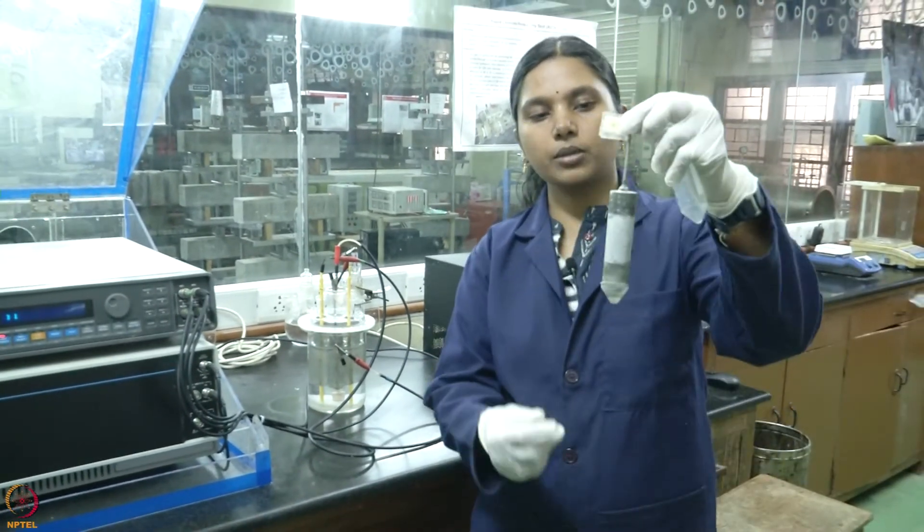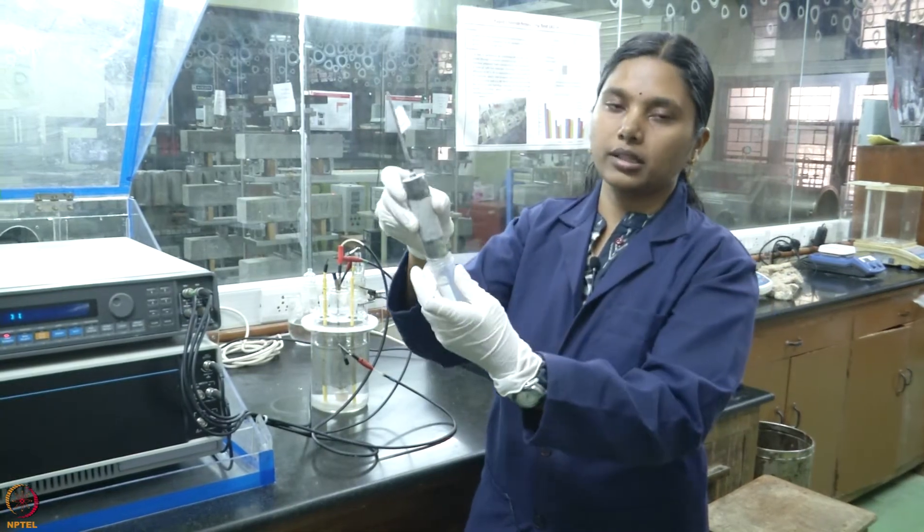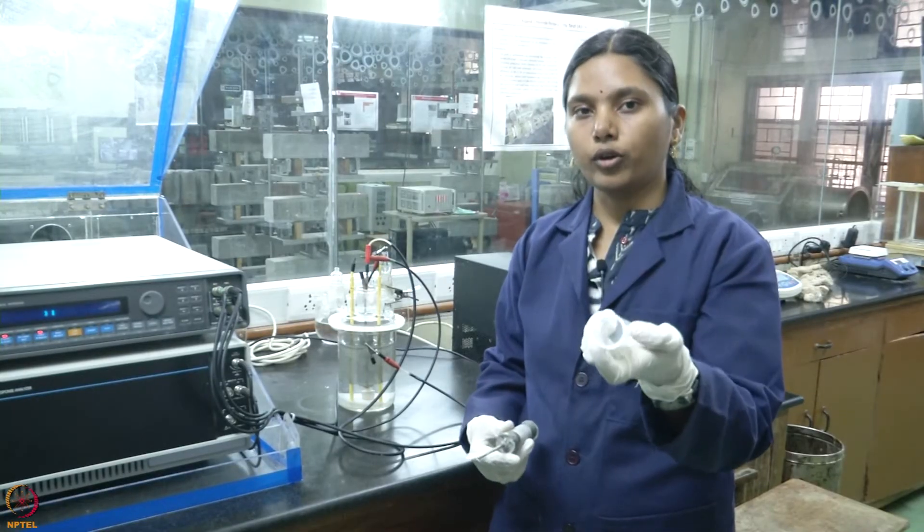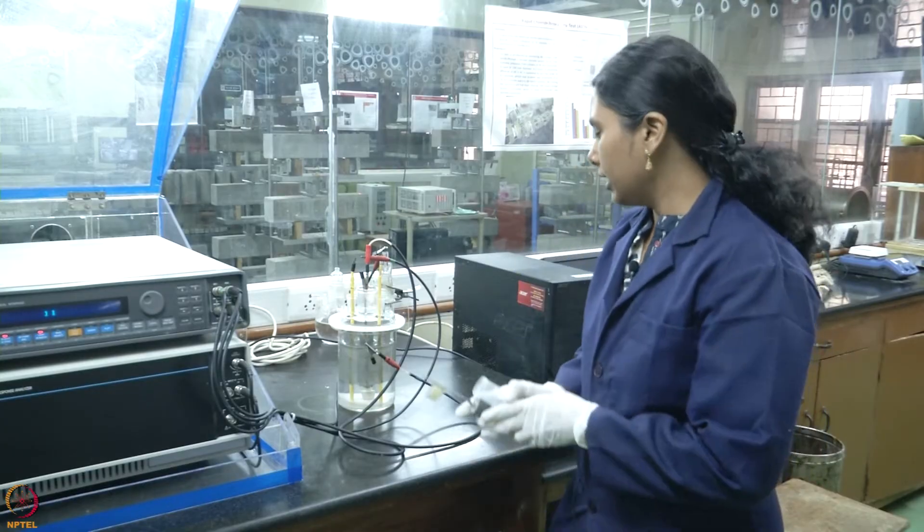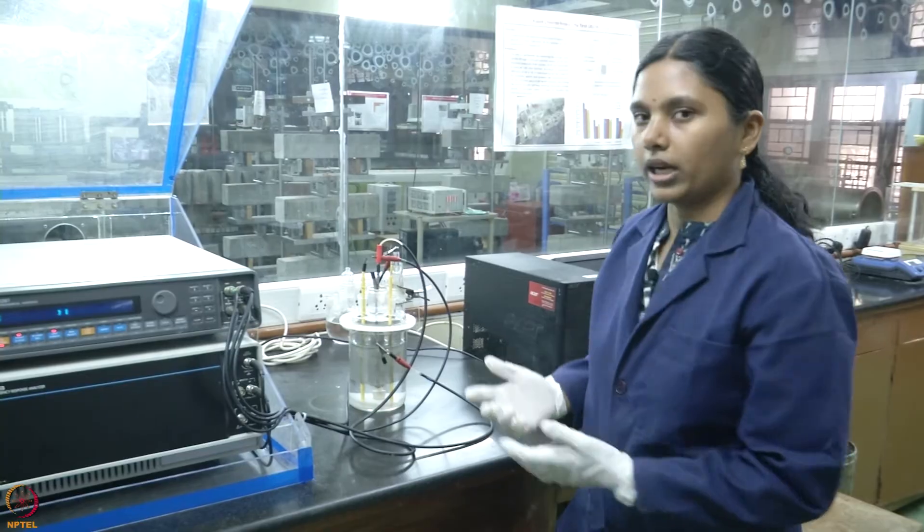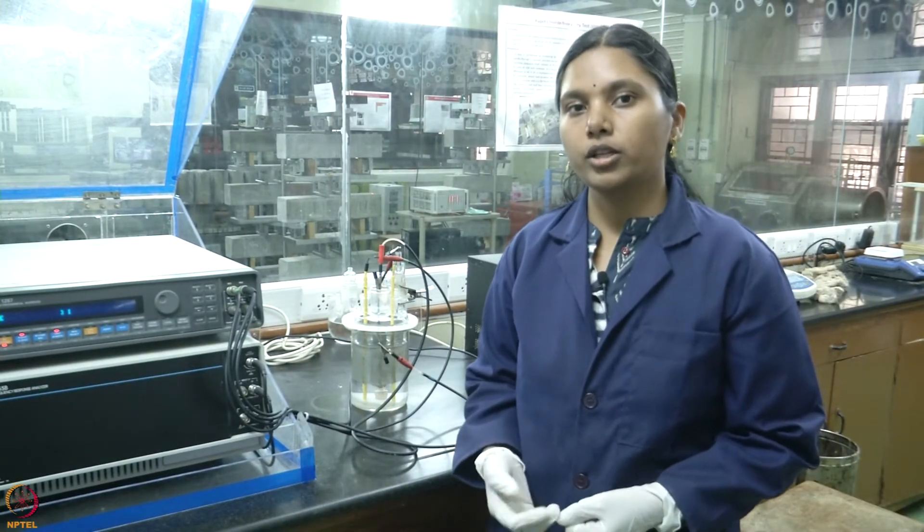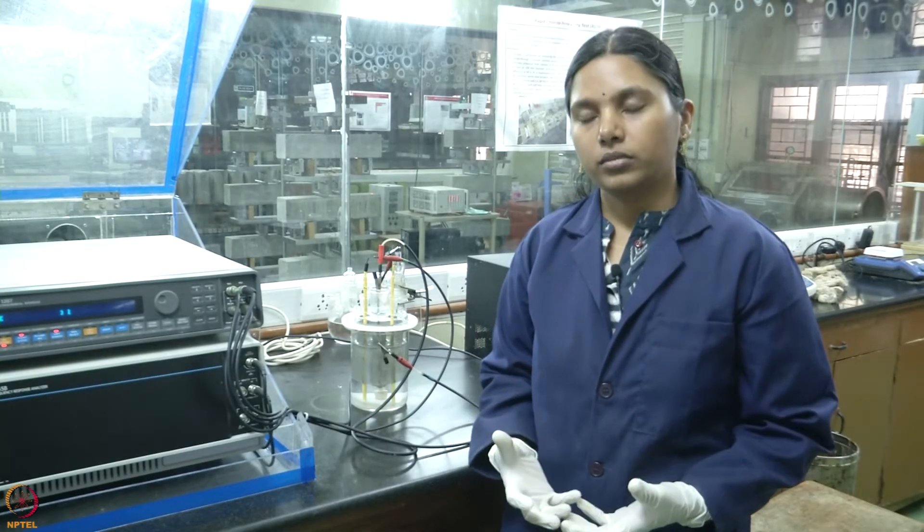Here I have used a lollipop specimen. This is the type of specimen. Here a steel rod is embedded in mortar. It is cast with this kind of plastic mold. And after 24 hours, it is demolded and the specimen is prepared. Now, in this experiment, I have subjected the specimen to chlorides. Depending on your specimen and the type of exposure condition you want, you can change the condition of the testing.